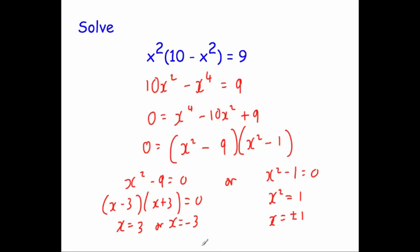So our solutions are x = -3, -1, 1, and 3. I've put them in numerical order.